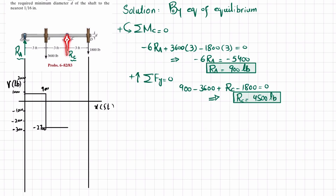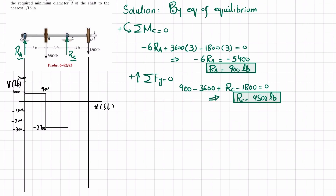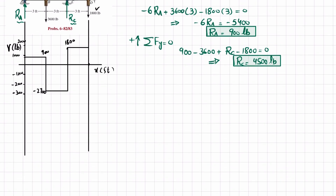At point C we have Rc which is 4500, so minus 2700 plus 4500 equals 1800. The shear force rises to 1800. Moving from C to D there is no vertical force, so it stays horizontal. At point D the minus 1800 load brings it back to zero. This completes the shear force diagram. Now we will draw the bending moment diagram.